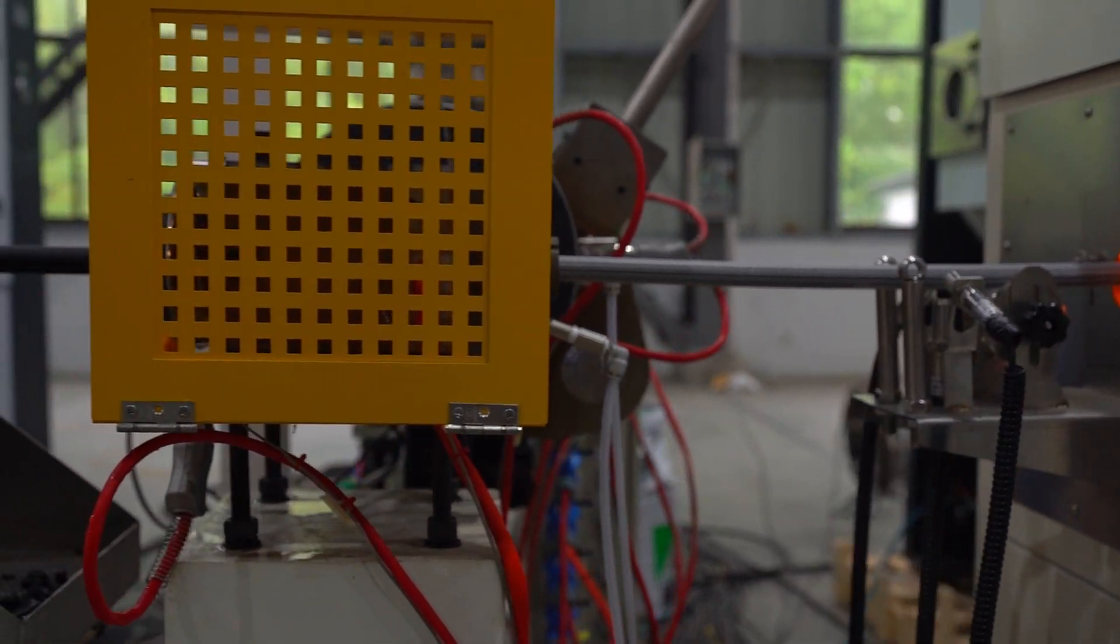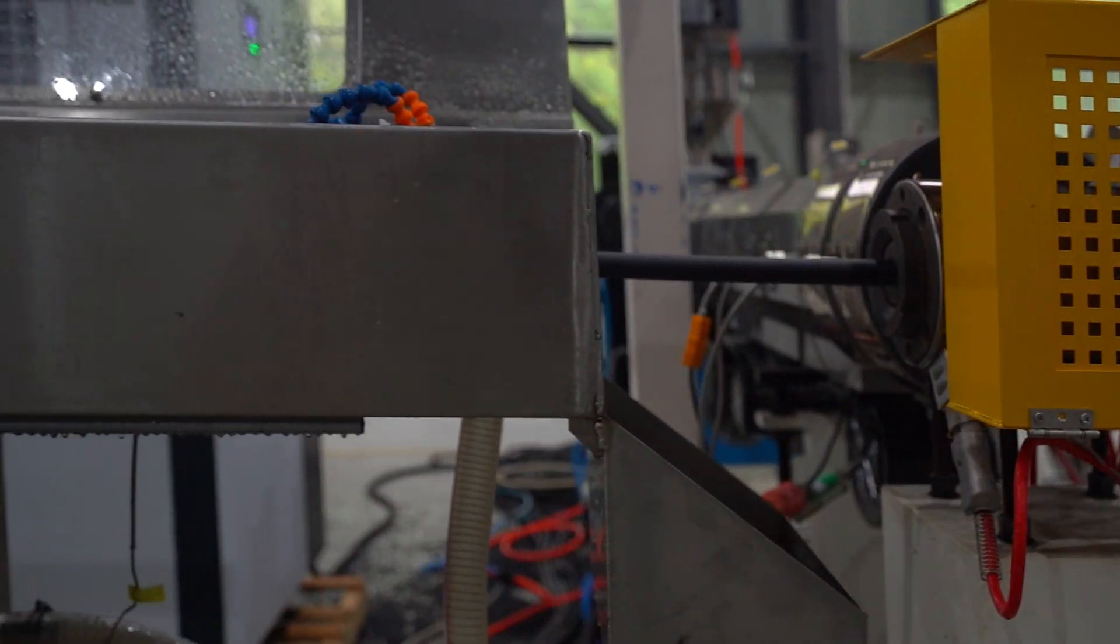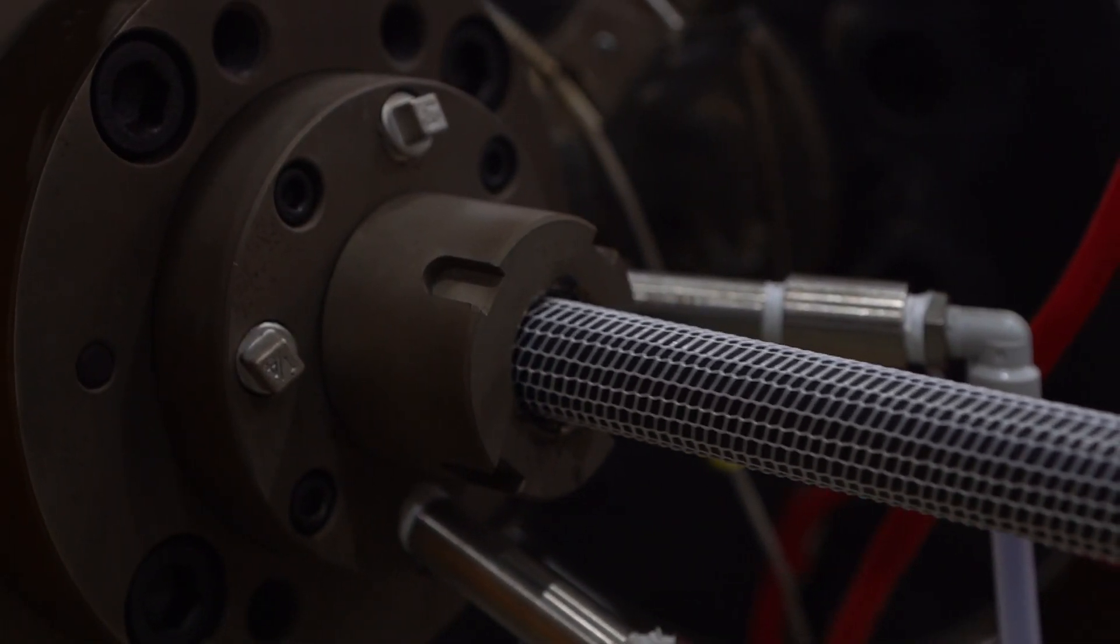In addition, our unique precise weak vacuum sizing system perfectly matches the extrusion cooling molding of TPV elastomer hoses, further improving the molding quality of the products.